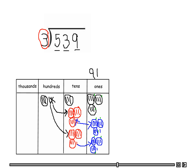Now let's look at the tens — how many groups do we have? One, two, three, four, five, six, seven. I need to scratch out the tens that were moved to the ones so we don't get confused. We have seven in the tens. And since we moved one hundred to the tens, we only have one hundred remaining. So my answer is 179 with a remainder of two.